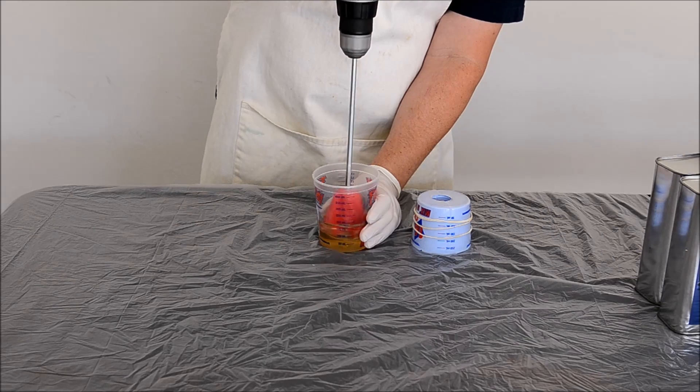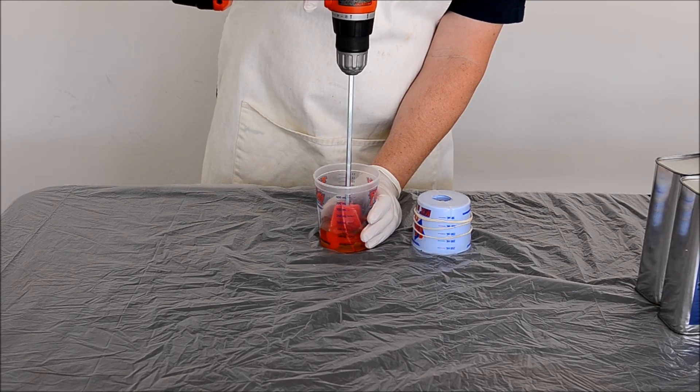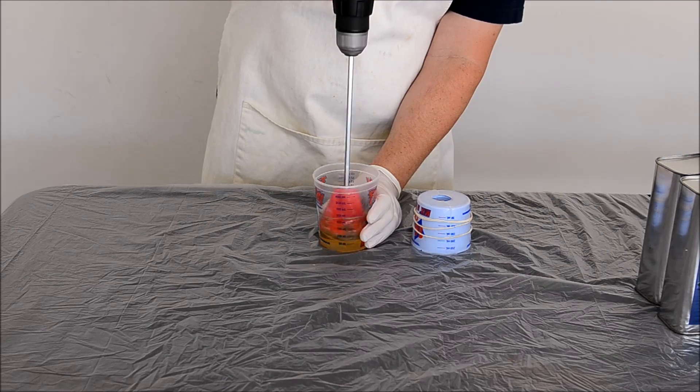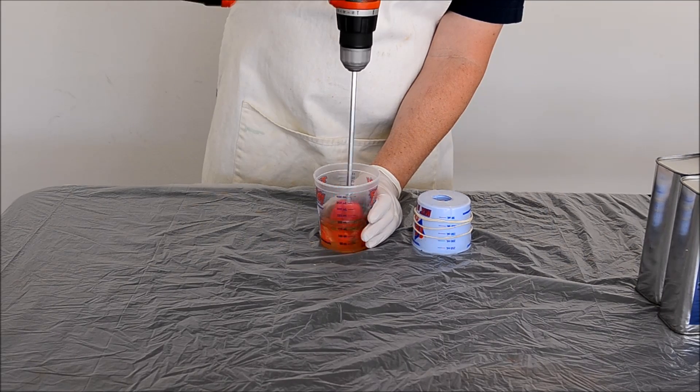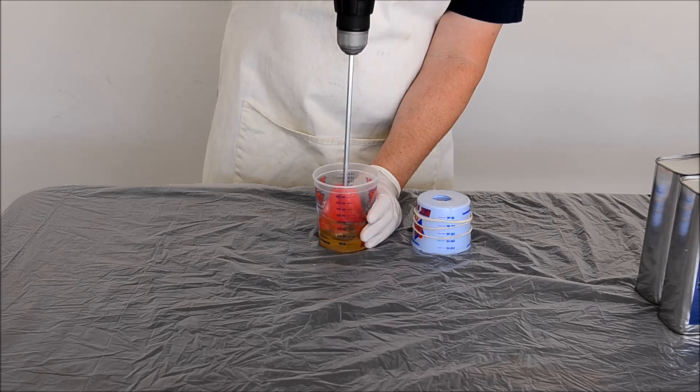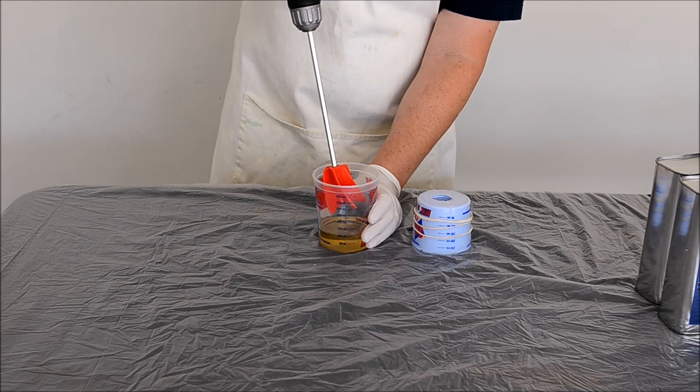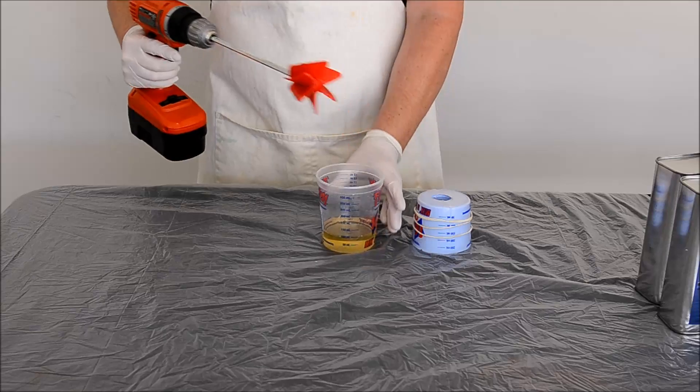Mix quickly as the polyurethane will start to gel within 90 to 120 seconds. If you are making a large part, use several smaller batches. If not, the polyurethane may cure before it is completely poured into the mold.